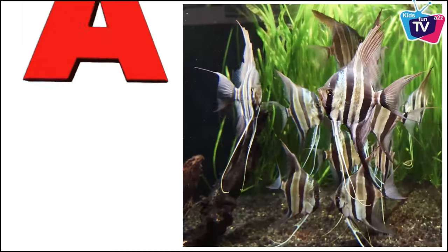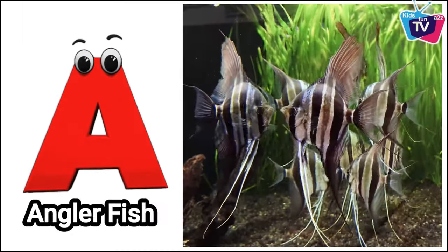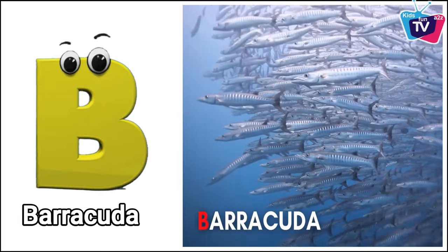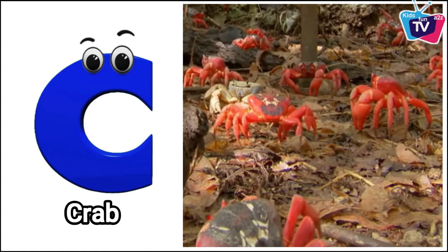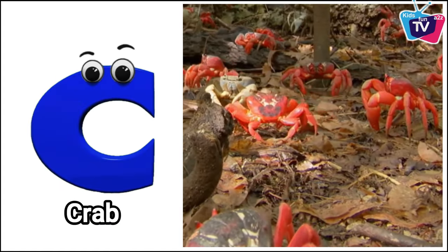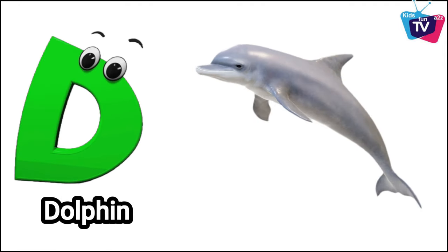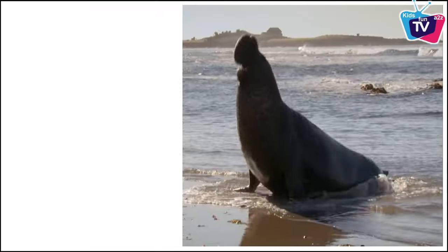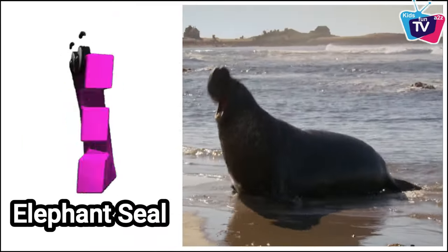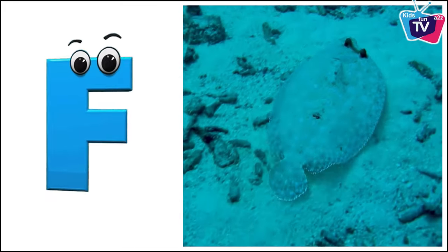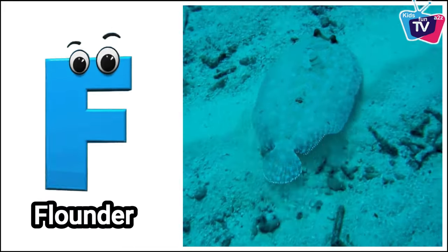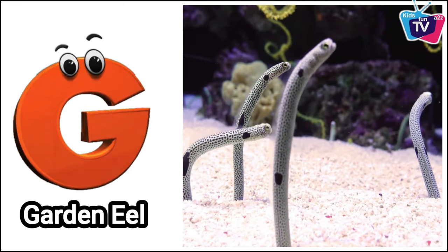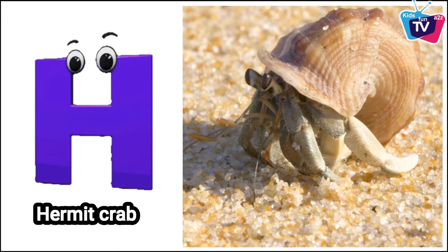A is for anglerfish. B is for barracuda. C is for crab. D is for dolphin. E is for elephant seal. F is for flounder. G is for garden eel. H is for hermit crab.